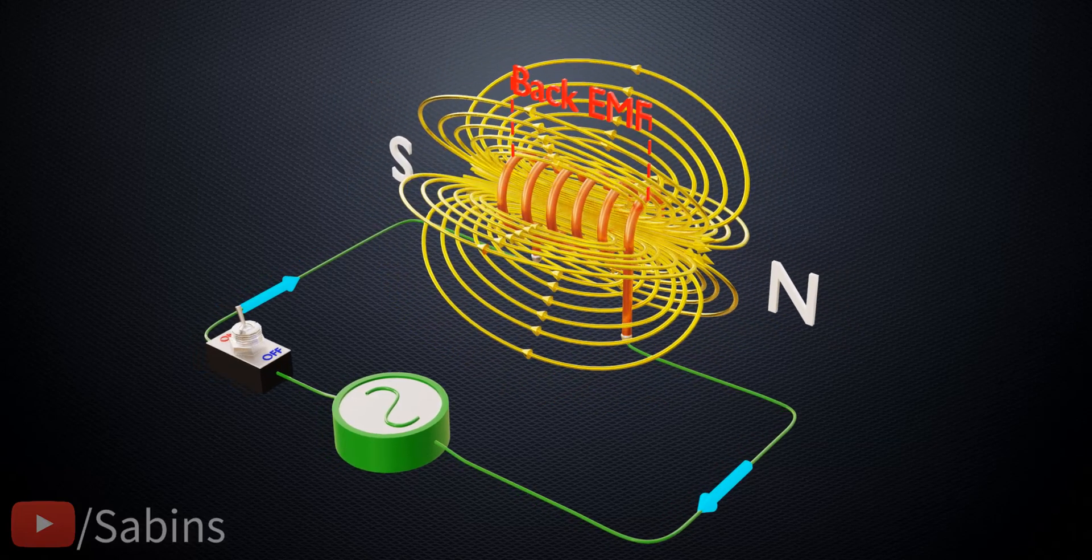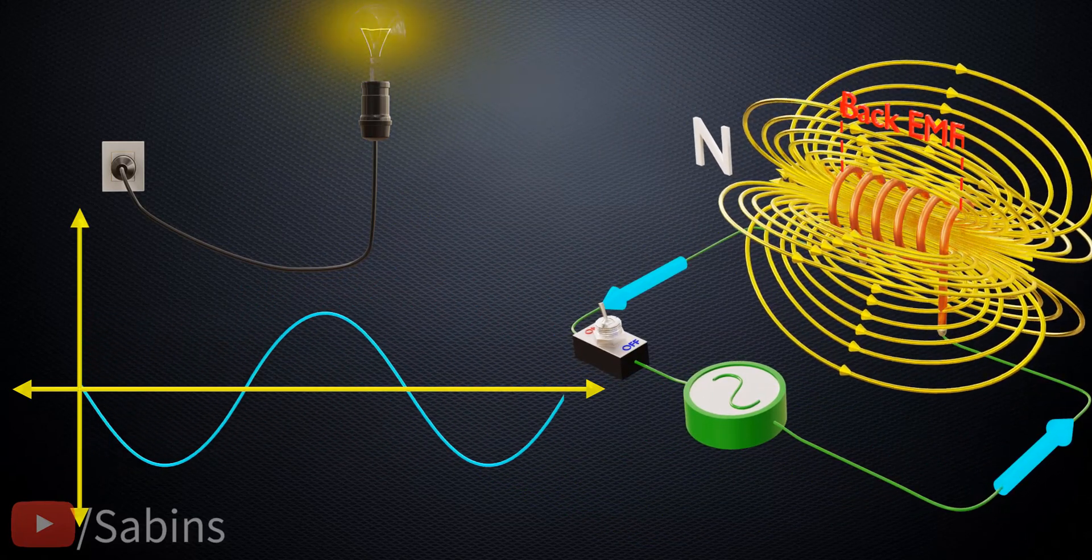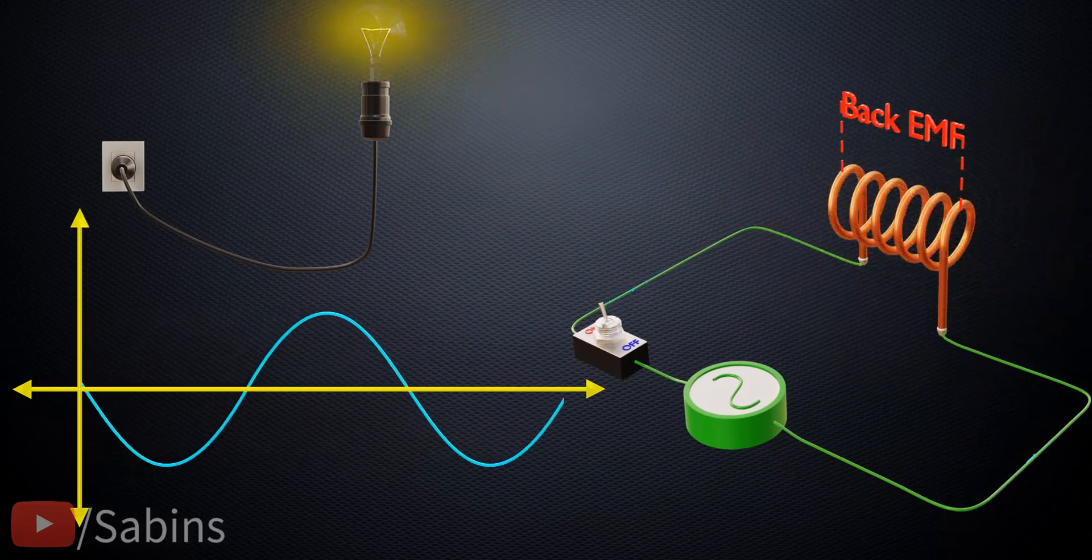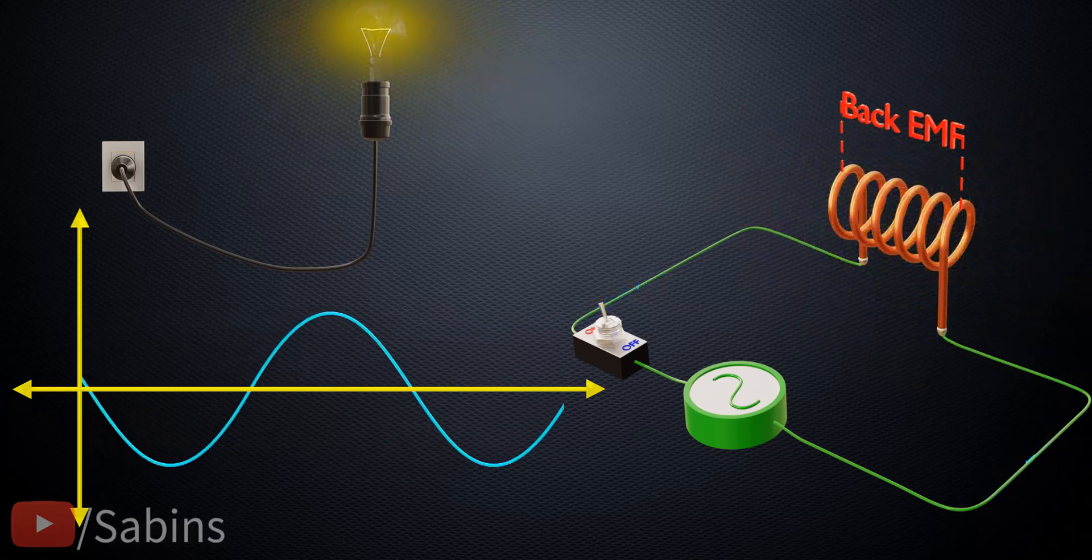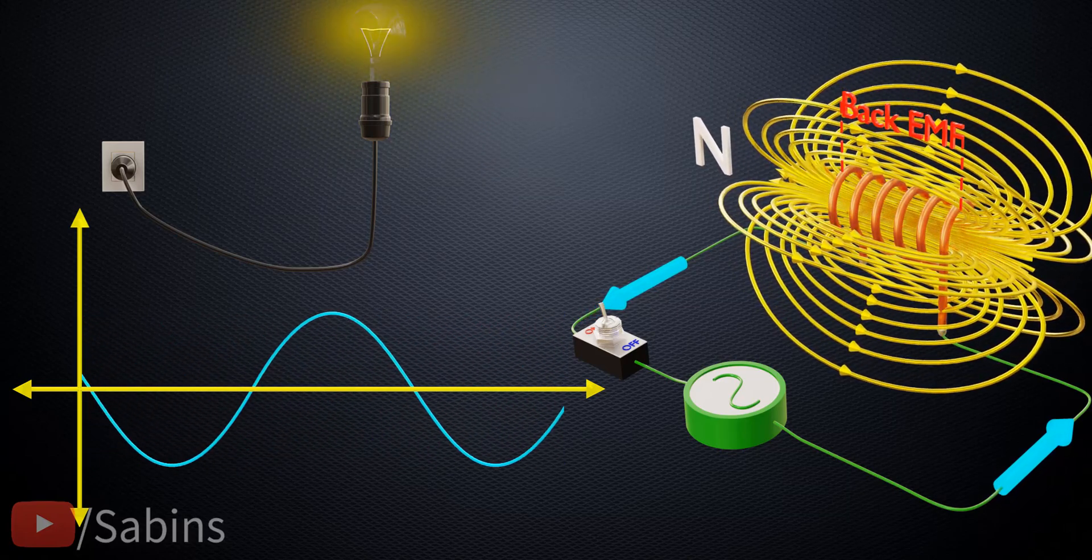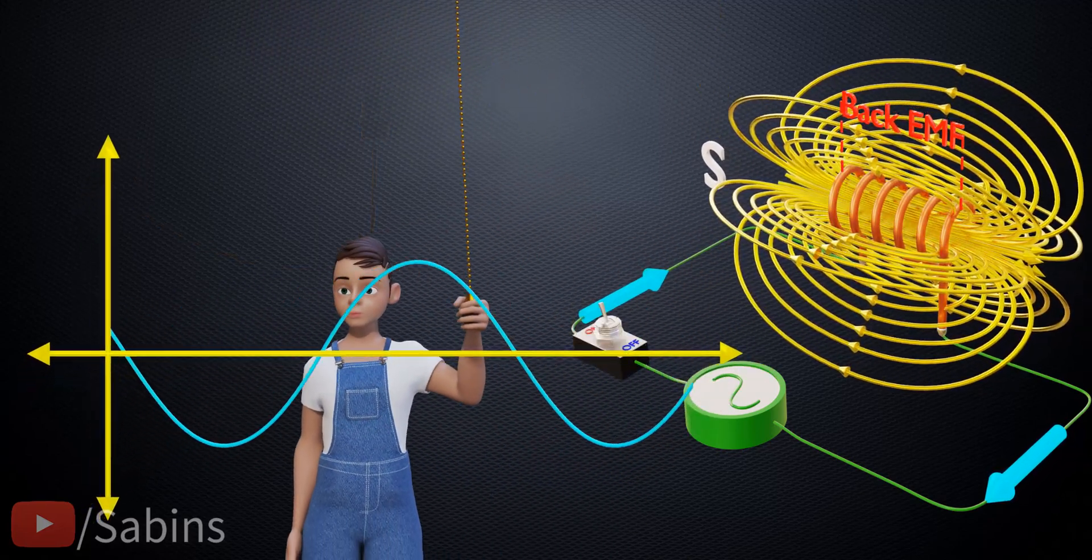The electricity we use everywhere is sinusoidal in nature. It's therefore very important to study the effect of a sinusoidally varying EMF across the inductor. You might have noted that in Faraday's Law, everything is about the rate of change. So, let's study more about a sine curve's rate of change.